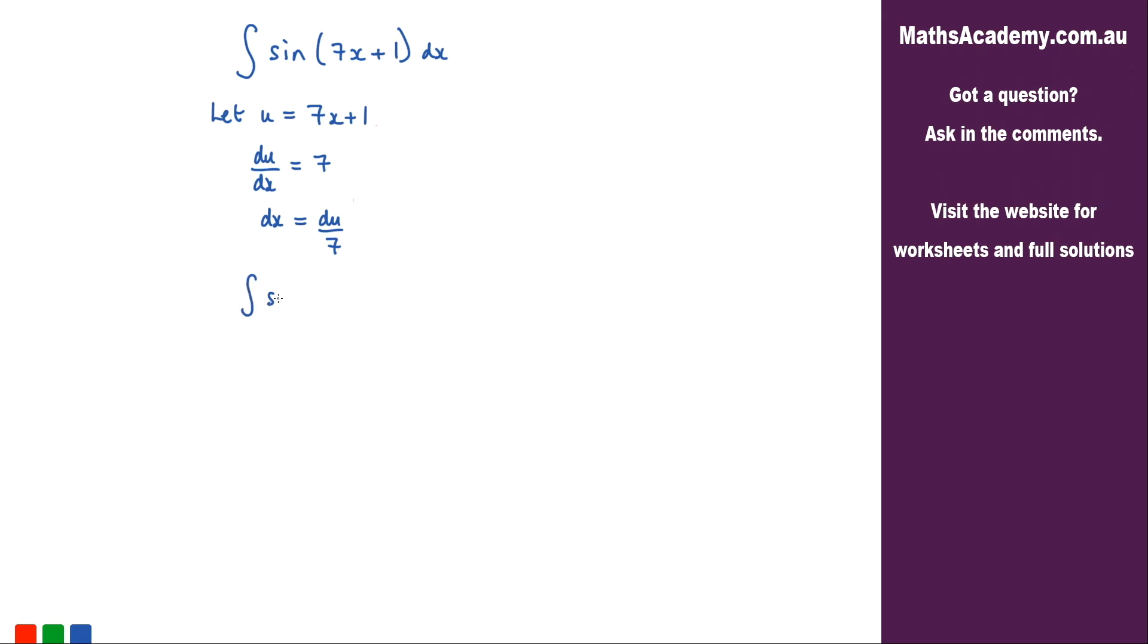We've got the integral of sine, instead of this 7x plus 1 we've made the substitution of u, so I've got sine of u. And instead of dx, well the dx is now du over 7.